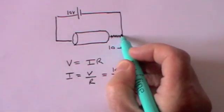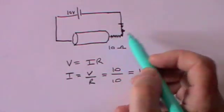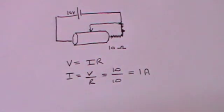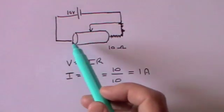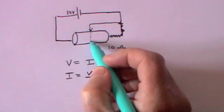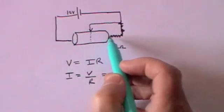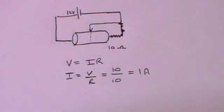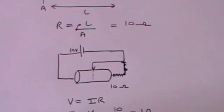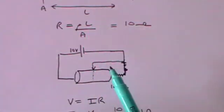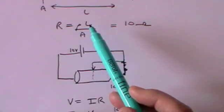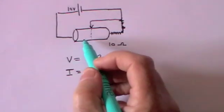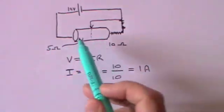But suppose now I disconnect this end so there's no longer a complete circuit, and I take a wire and stick it halfway along the piece of conducting material. What is the effective resistance now? Well, the resistance is just this half of the wire, because the other half is just dangling — electricity goes through the connected half and up the wire. The resistance is rho L over A; rho and A haven't changed but the length has halved, so the resistance has also halved to 5 ohms.